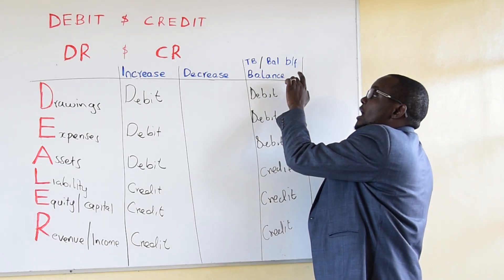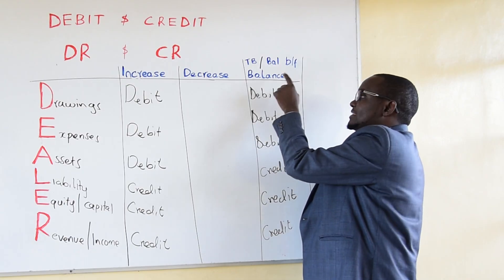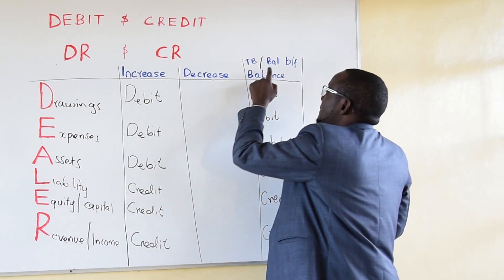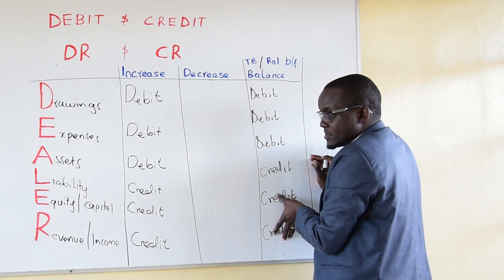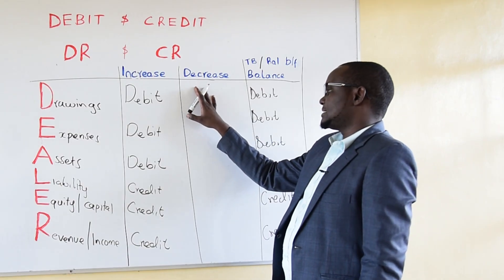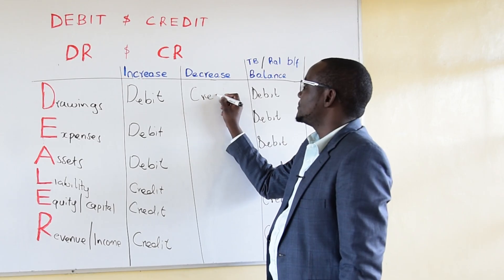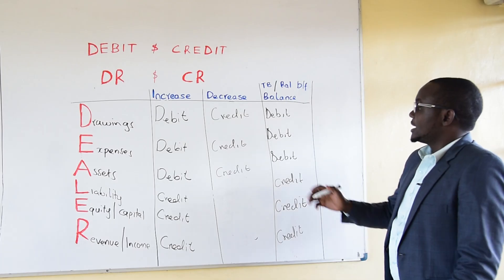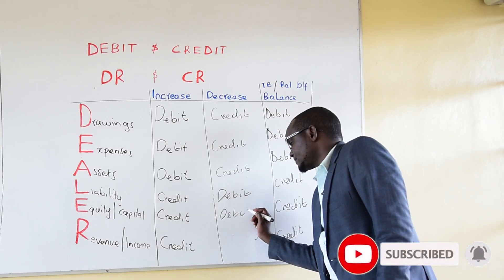The same thing happens with ledgers. If we are doing a ledger for drawings, the balance brought forward will appear on the debit side. The balance brought forward of any expense ledger will also appear on the debit side. For any asset account, the balance brought forward will appear on the debit side. For a liability account, the balance brought forward will appear on the credit side — and the same applies to revenue and capital accounts. A decrease is the opposite of an increase: when drawings were increasing we debited, so a decrease means we credit. A decrease in expenses is also a credit, and a decrease in assets is also a credit. So for decrease we have credit, credit, credit for the first three, and debit, debit, debit for the last three.